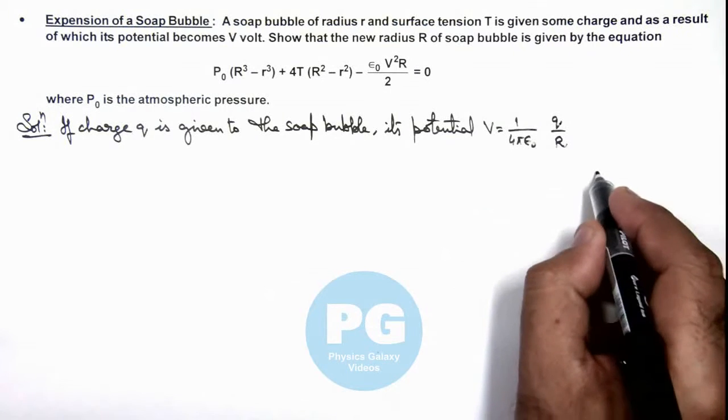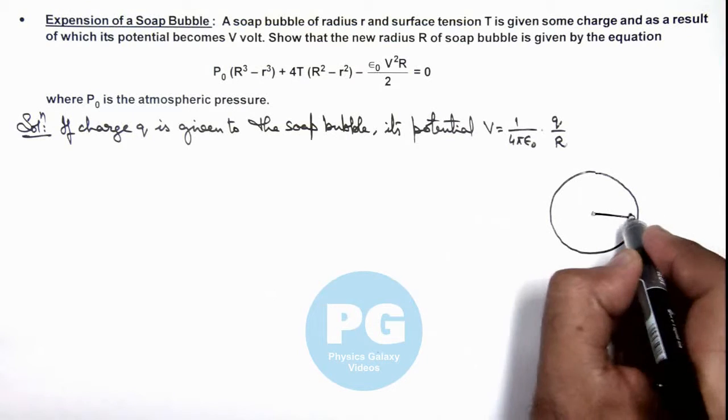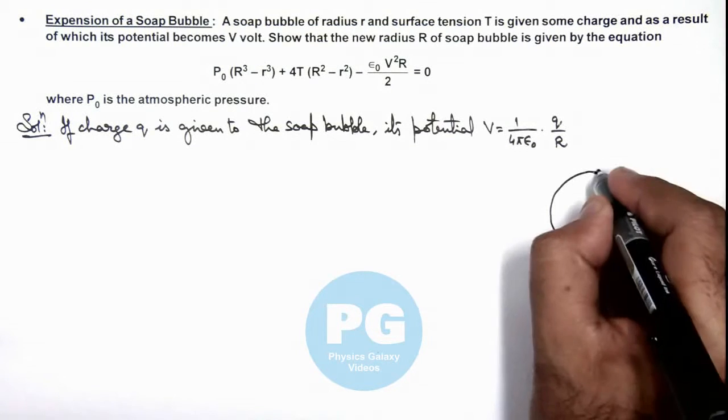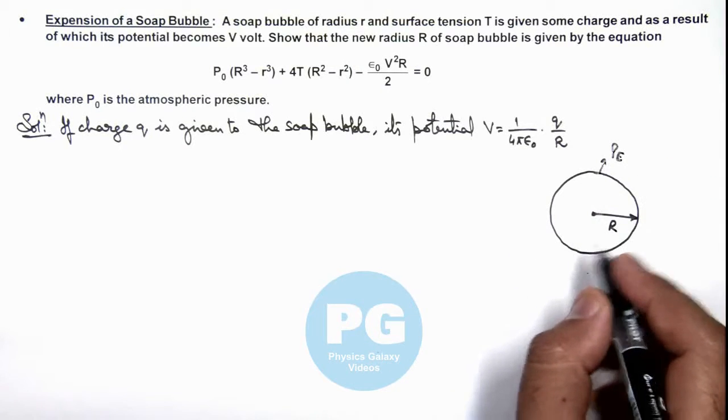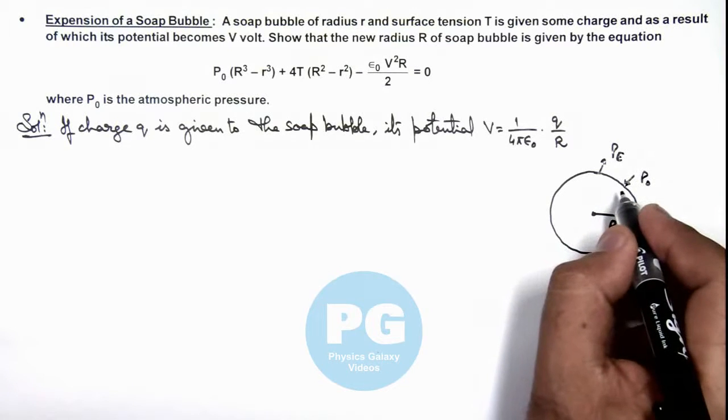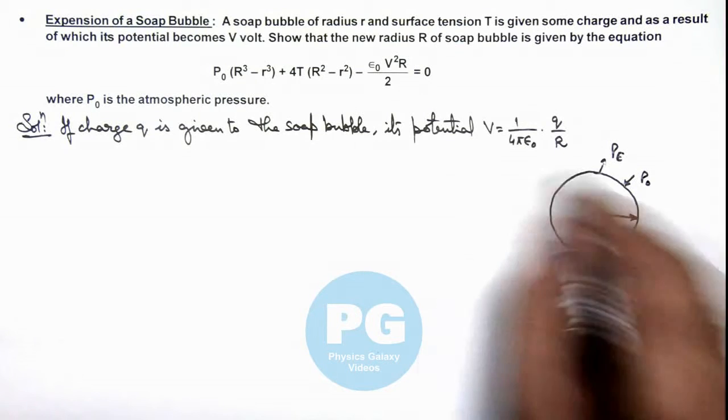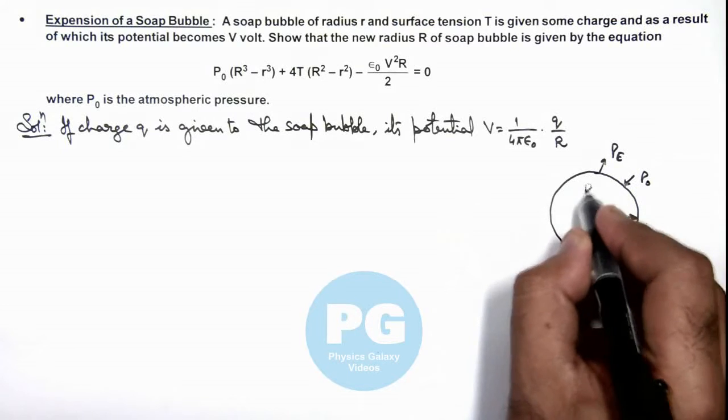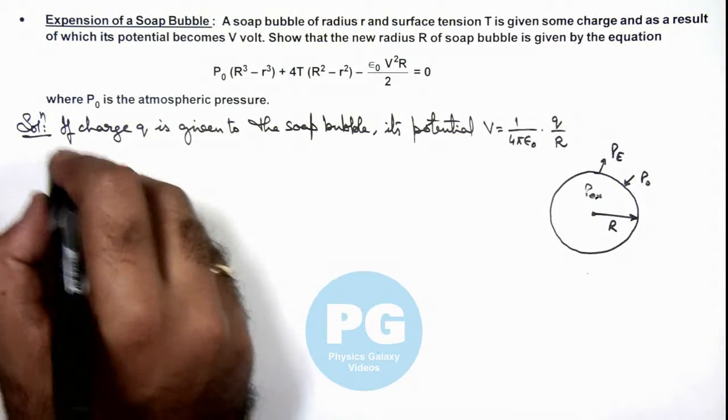So if the soap bubble expands to a radius R, in this situation its outer surface will be experiencing an outward electric pressure. And inside there'll be an atmospheric pressure acting on the surface in radially inward direction. Air pressure is scalar but it'll be in inward sense. And due to surface tension there will be an excess pressure inside.